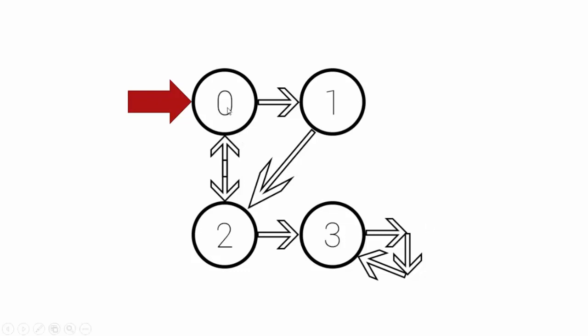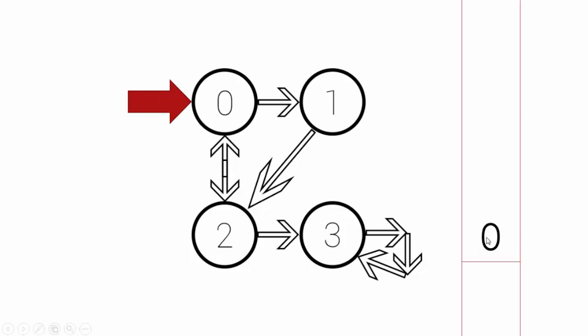Let's say we start with node 0 and we are using a queue. We take 0 and put it in the queue. The first step is to take the node we are currently at and put it in the queue. Then we remove that element — in a queue it's first in, first out. So you put 0 in, it's the only element, so you just dequeue it. Once you dequeue it, you go to node 0 and check which nodes it has routes to — 0 has routes to 2 and to 1.